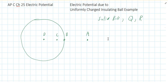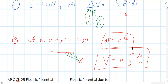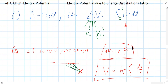So our first goal here is to figure out which method to use — method one or method two. Do we either know the electric field and can find change in voltage, or do we consider our ball a bunch of point charges and try to write voltage in terms of radius?